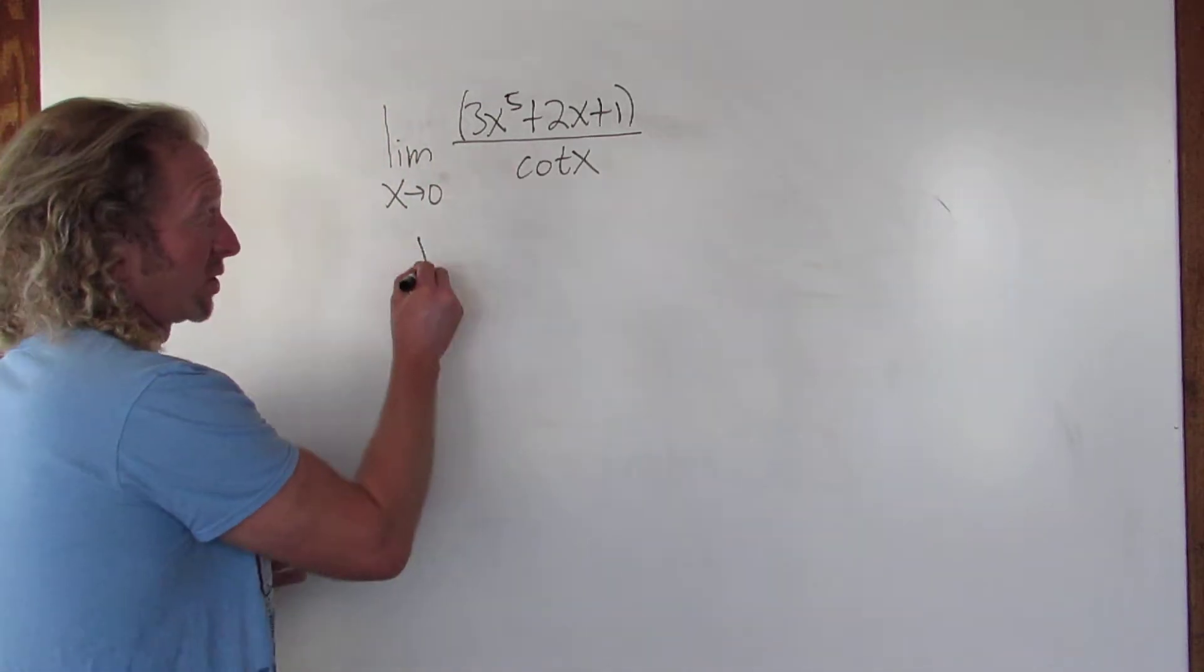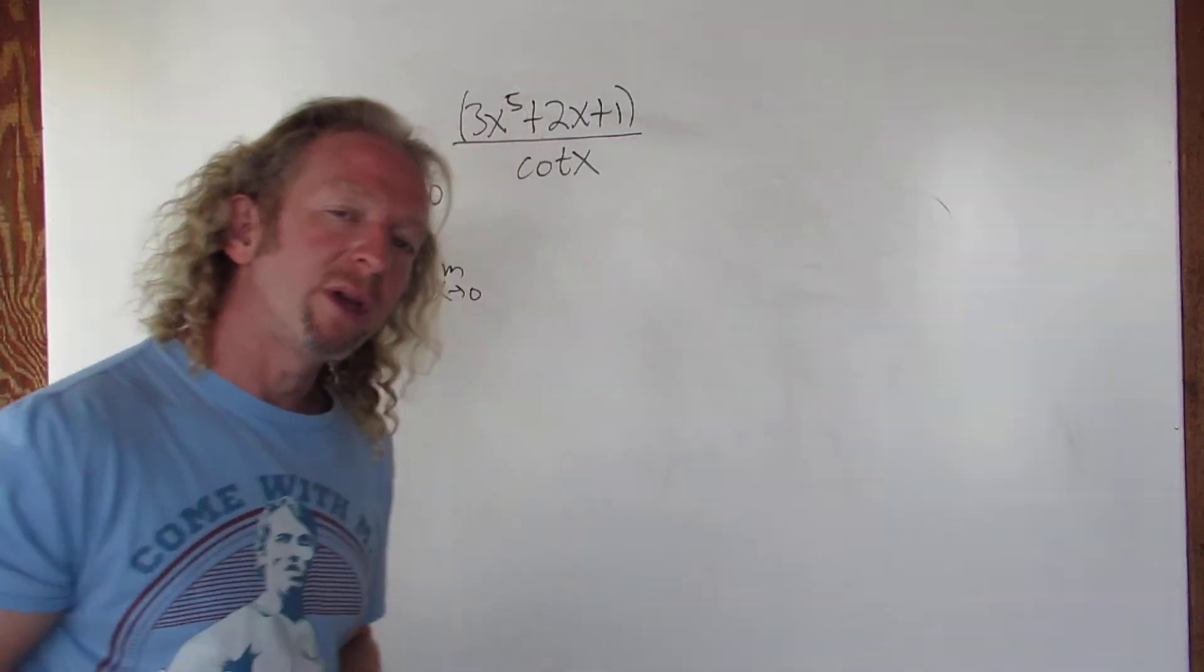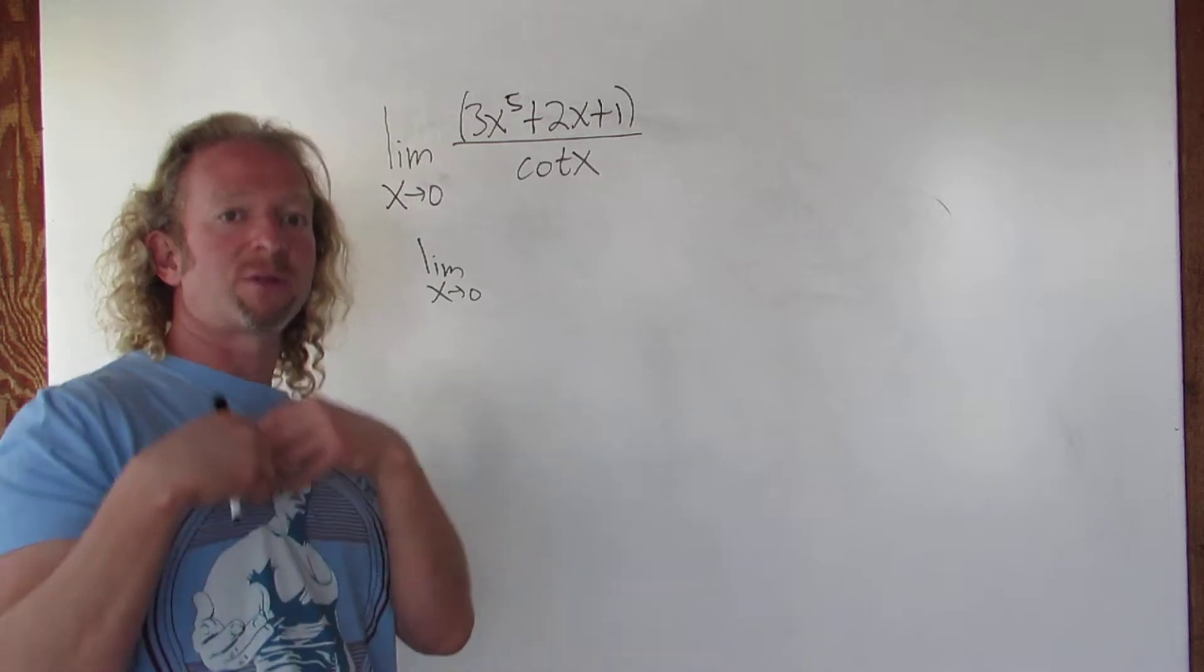And the reason is, if you're not sure what to do, then a good first step, even before you plug in 0, is write cotangent in terms of something that you're more familiar with.